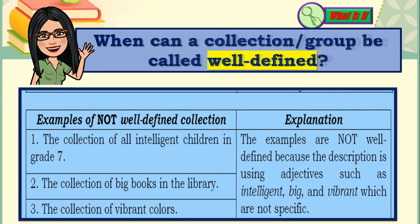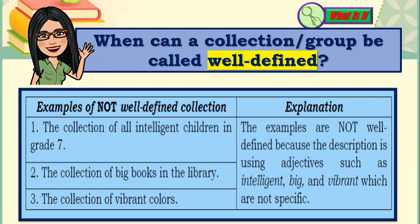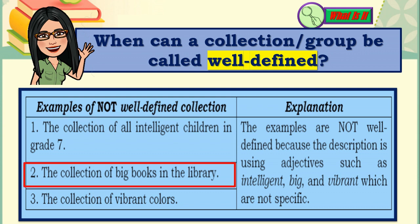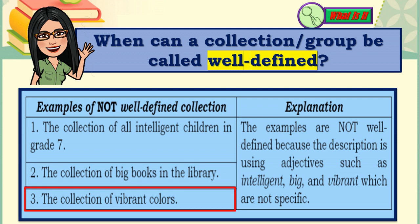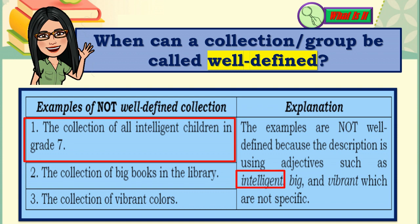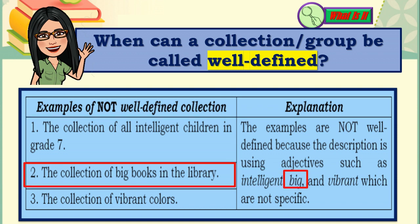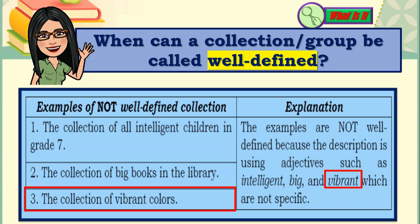Let me show you examples of non-well-defined collections. Number 1: the collection of all intelligent children in grade 7. The collection of big books in the library. The collection of vibrant colors. These examples are not well-defined because the description uses adjectives such as 'intelligent,' 'big,' and 'vibrant,' which are not specific.